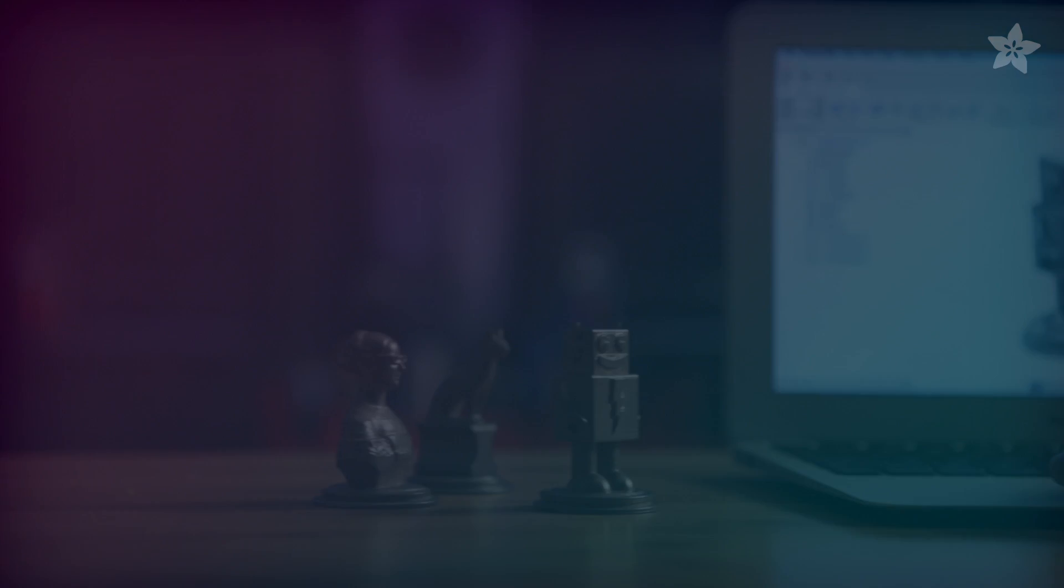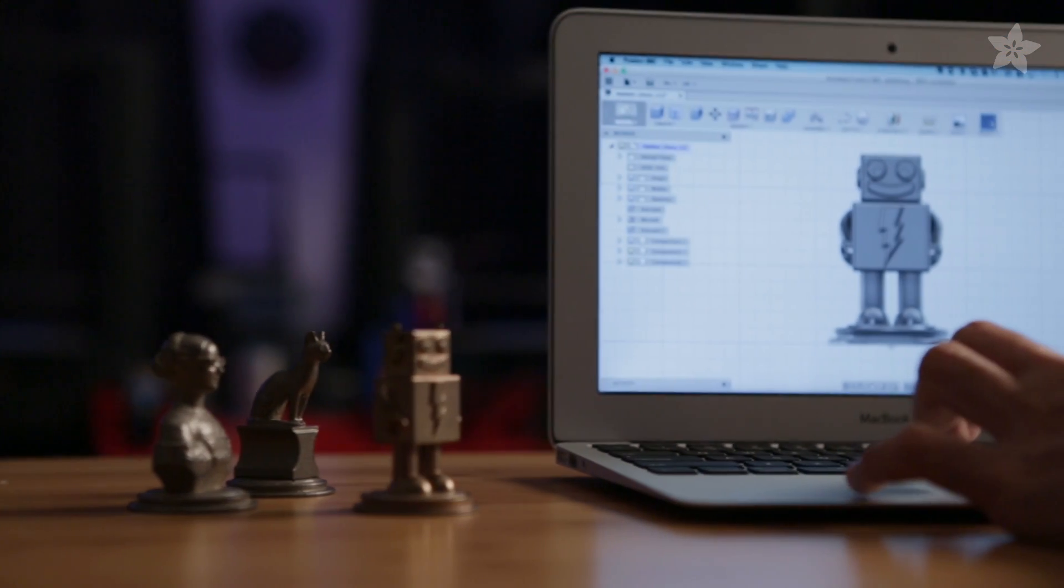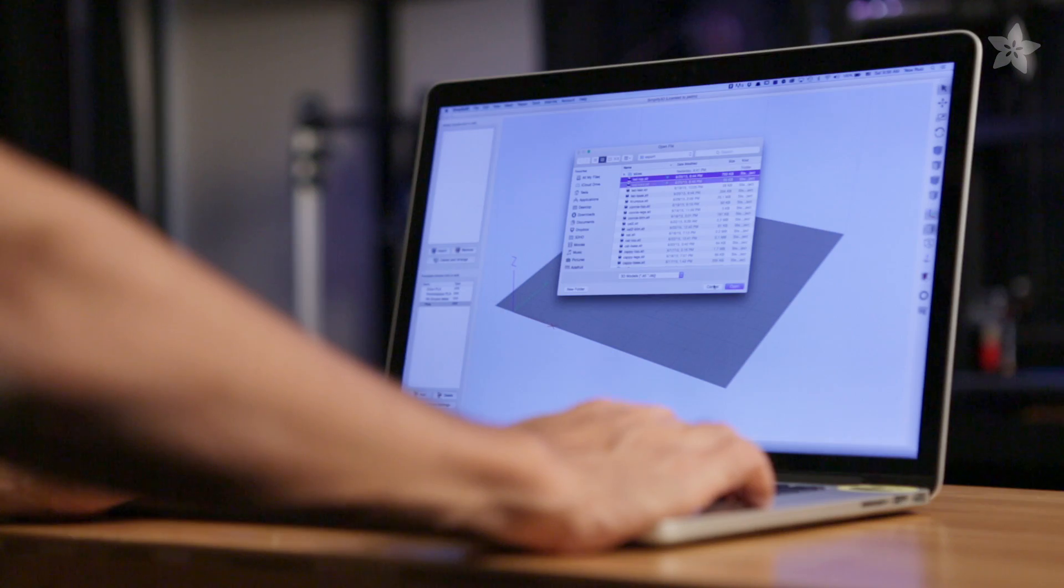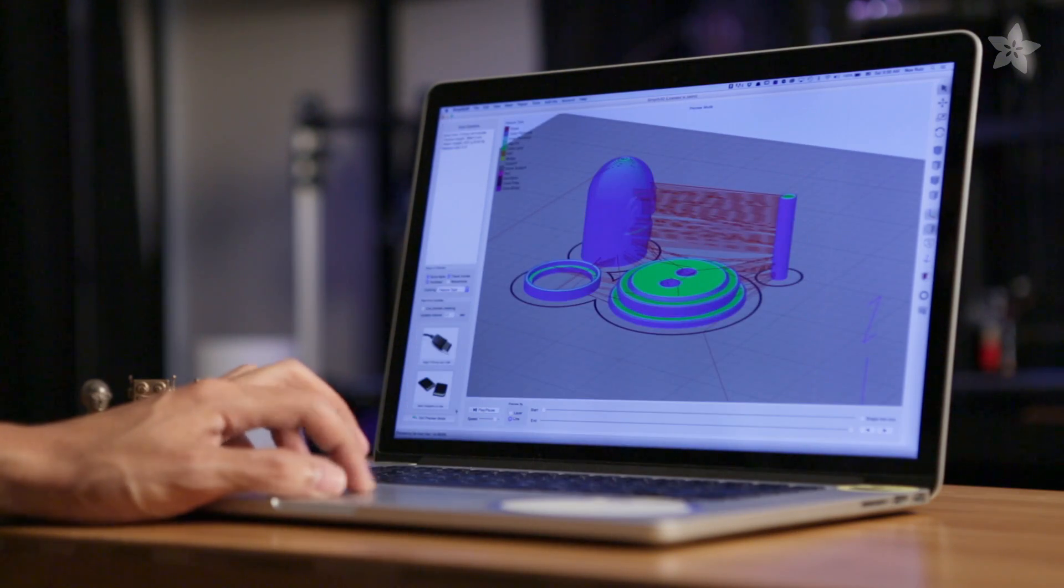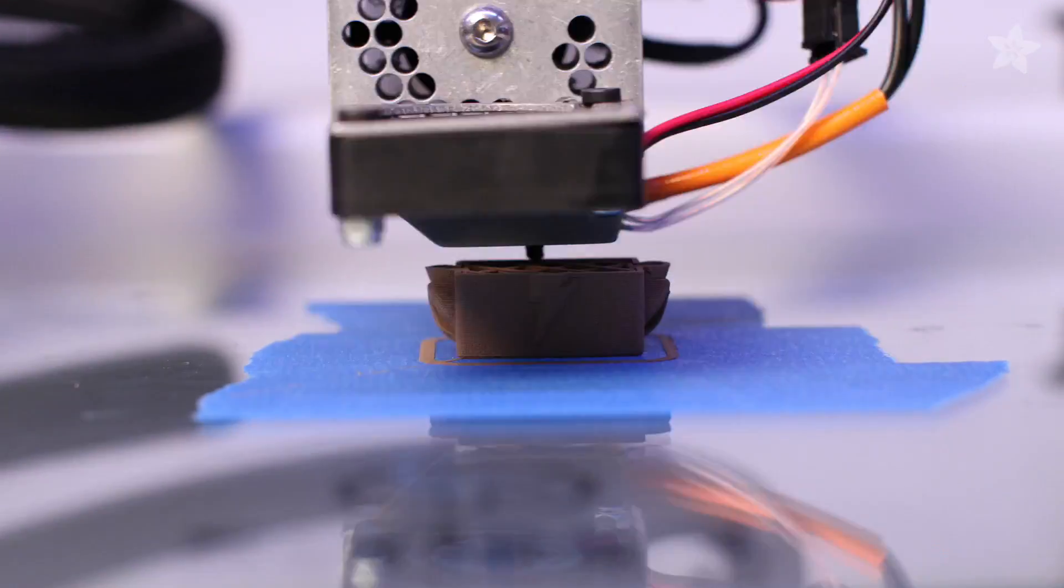We designed the characters in CAD and separated them into pieces for printing in metal filament. To prepare the parts for slicing, we oriented the parts and optimized the settings to print with no support material.